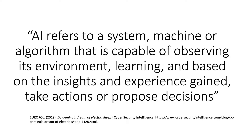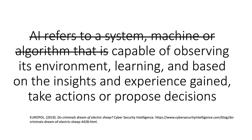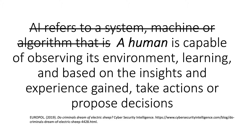There are a lot of definitions of AI, but I particularly like this one: AI refers to a system, machine, or algorithm that is capable of observing its environment, learning, and based upon the insights and experience gained, take actions or propose decisions. Now if we replace the first few words with 'a human': a human is capable of observing its environment, learning, and based on the insights and experience gained, take actions or propose decisions.